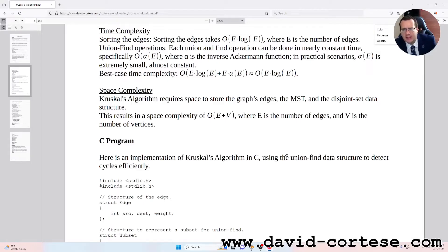and the disjoint set data structure. This results in a space complexity of O of E plus V, where E is the number of edges and V is the number of vertices.